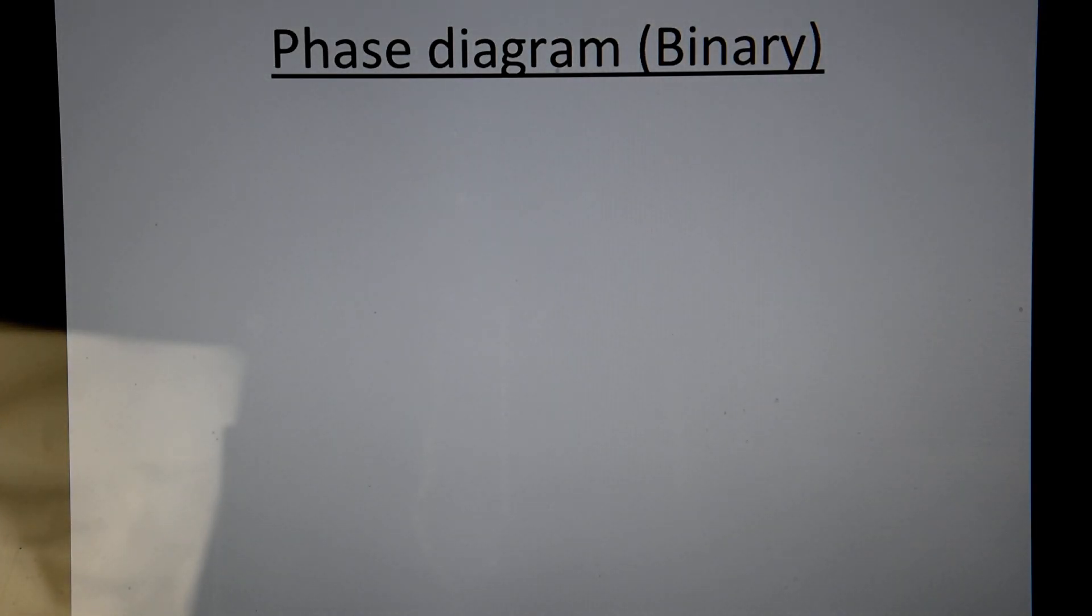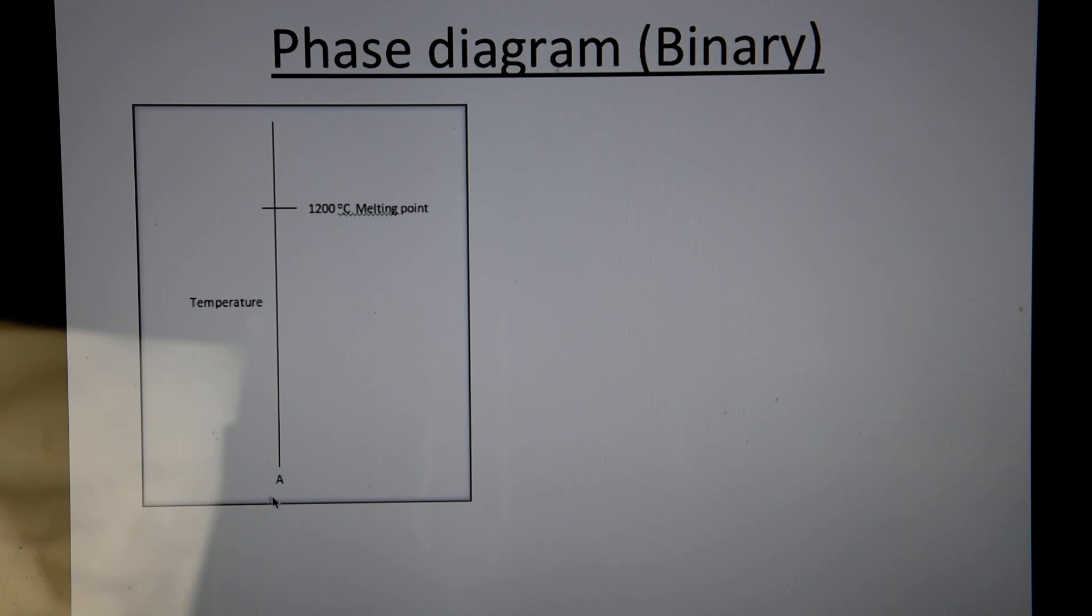Next, we'll talk about phase diagrams. Now here we'll talk about binary phase diagrams, but if you think about a substance, called substance A, it could be a metal or it could be an element, any element. It would have a specific temperature at which it would melt. So there's a specific temperature where the solid begins to turn into liquid. So for this example, maybe at 1200 degrees Celsius,